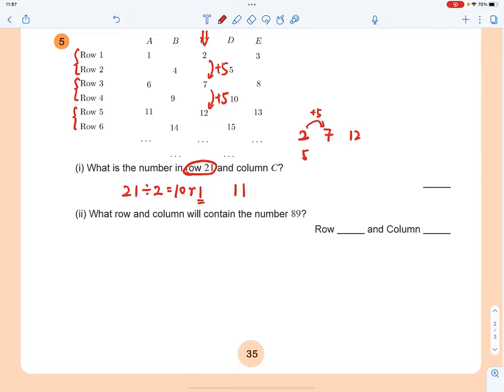The common difference is 5, so you got 5n. When you let n equal 1, you got 5. You have to take away 3 to get 2, the first term.